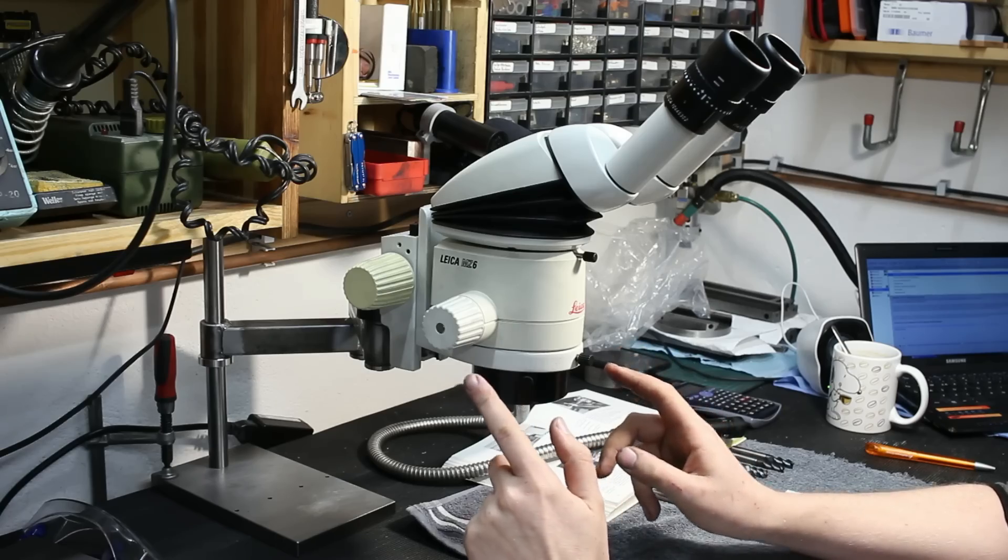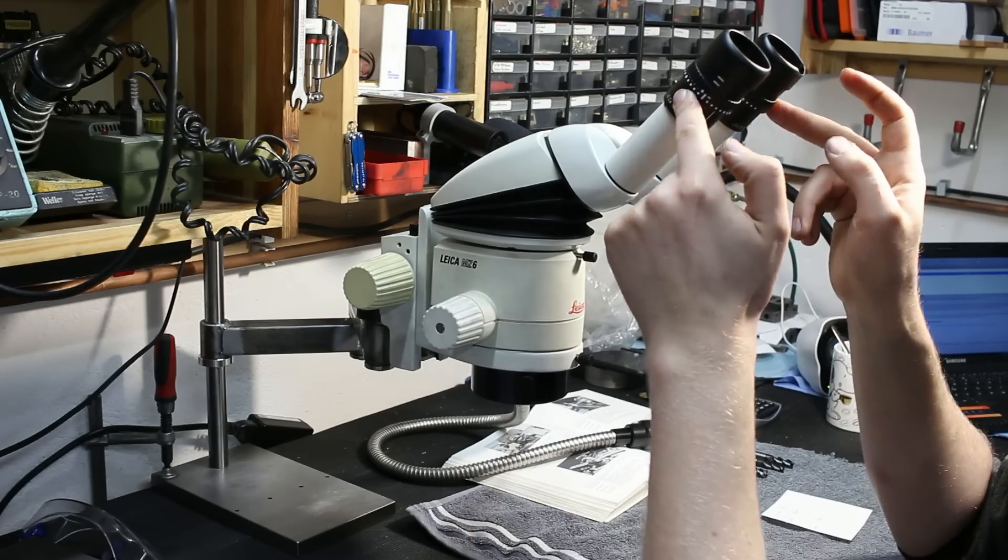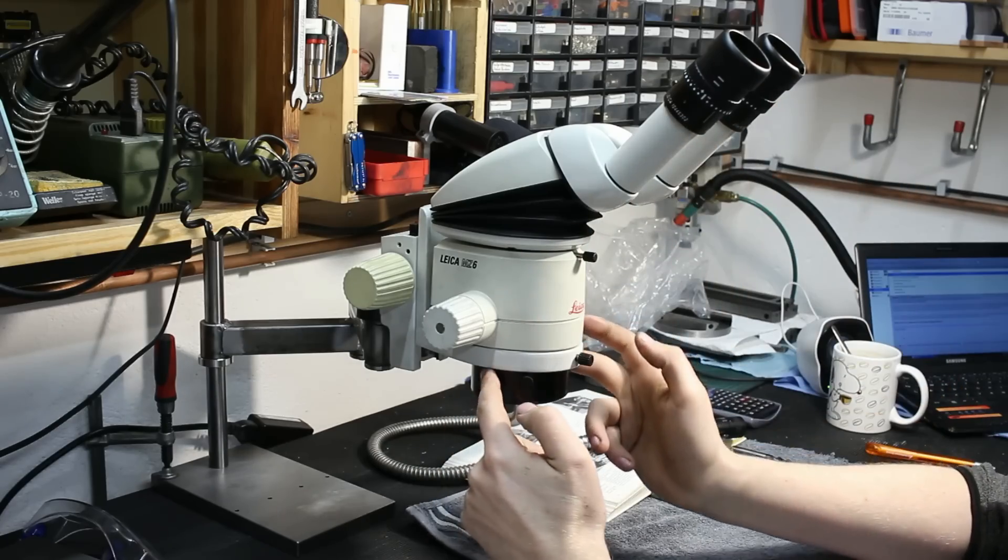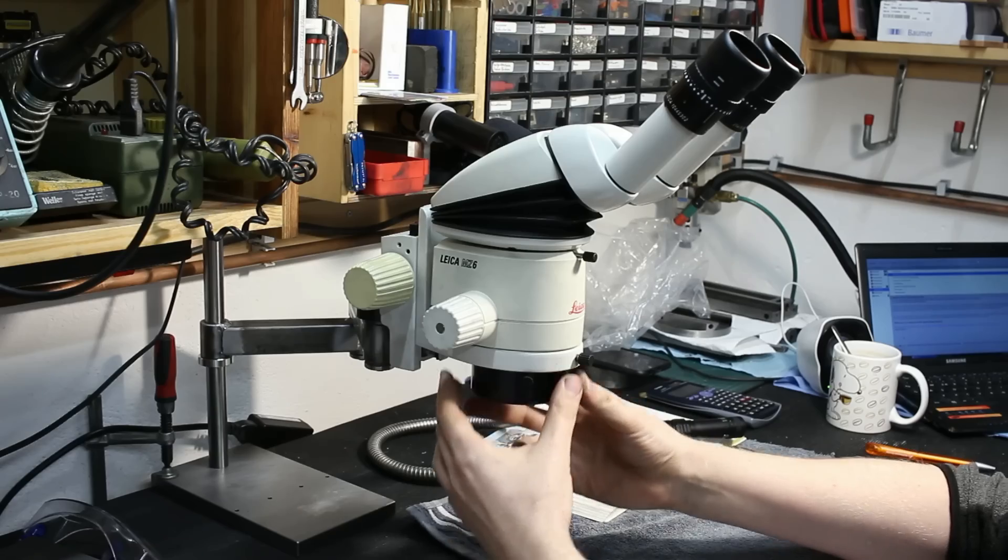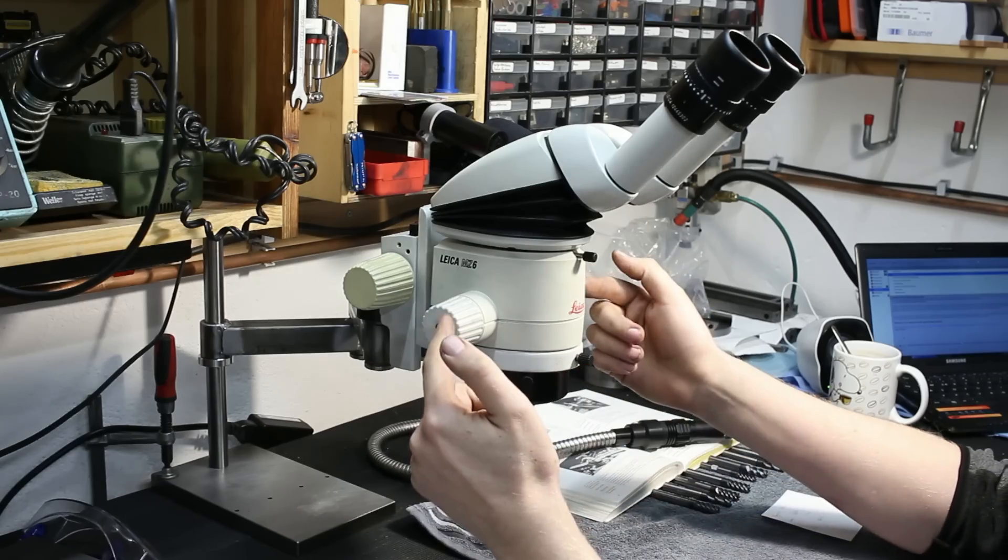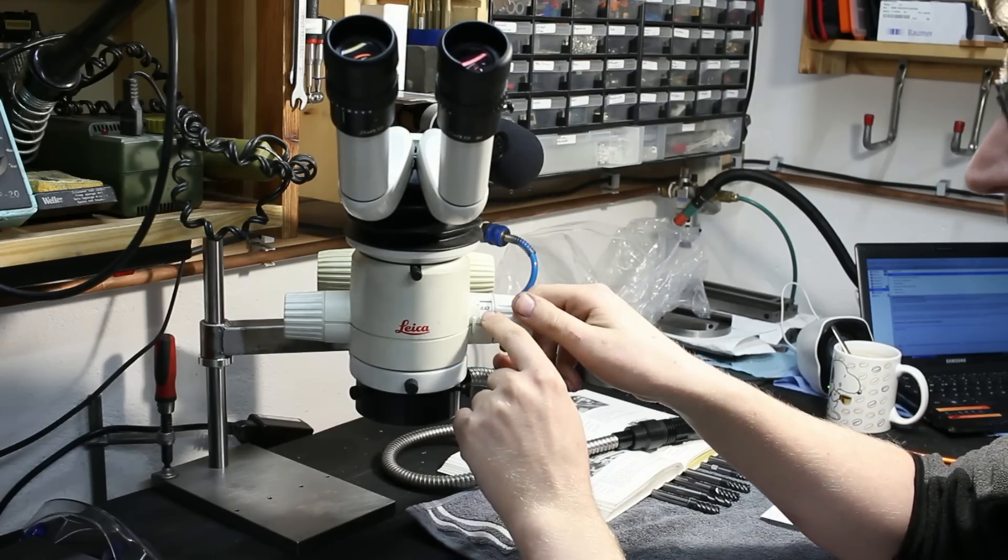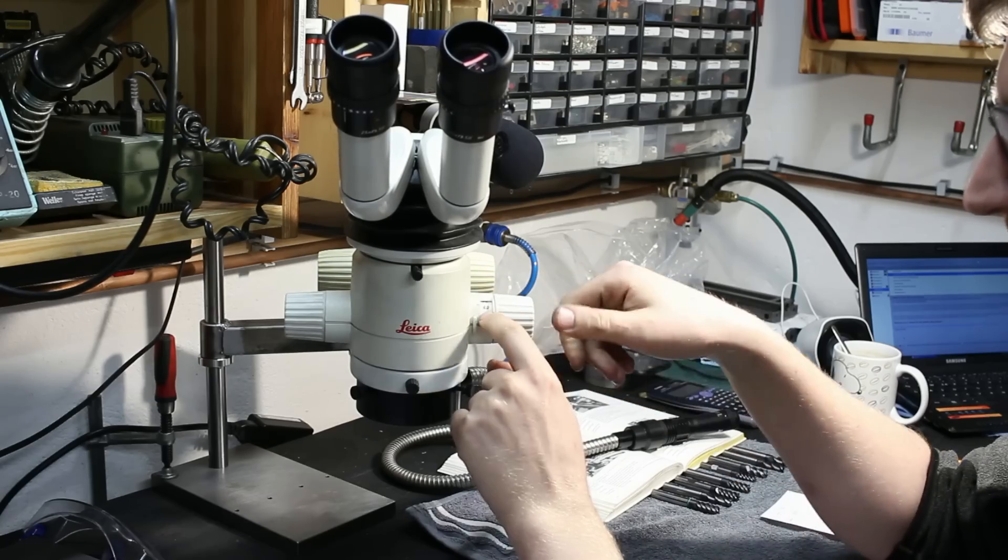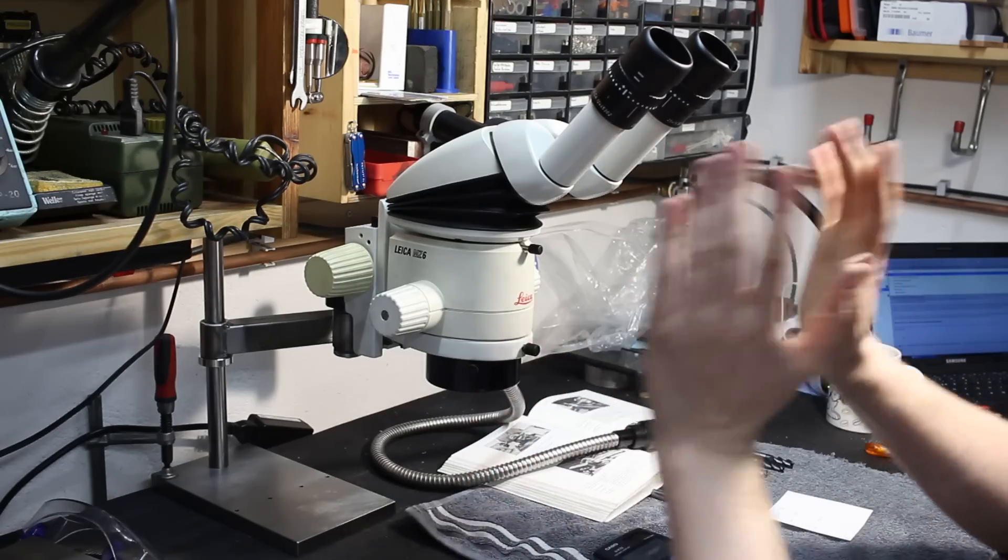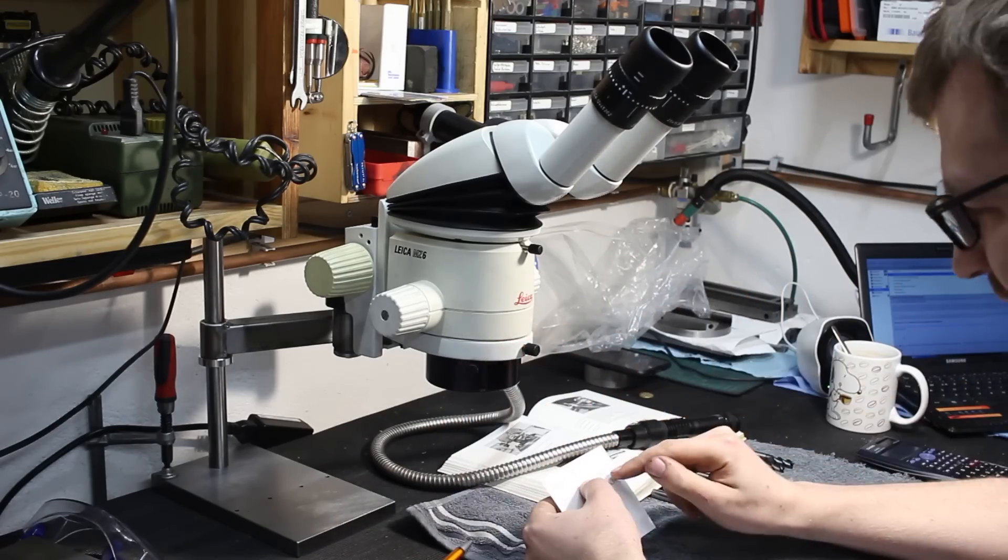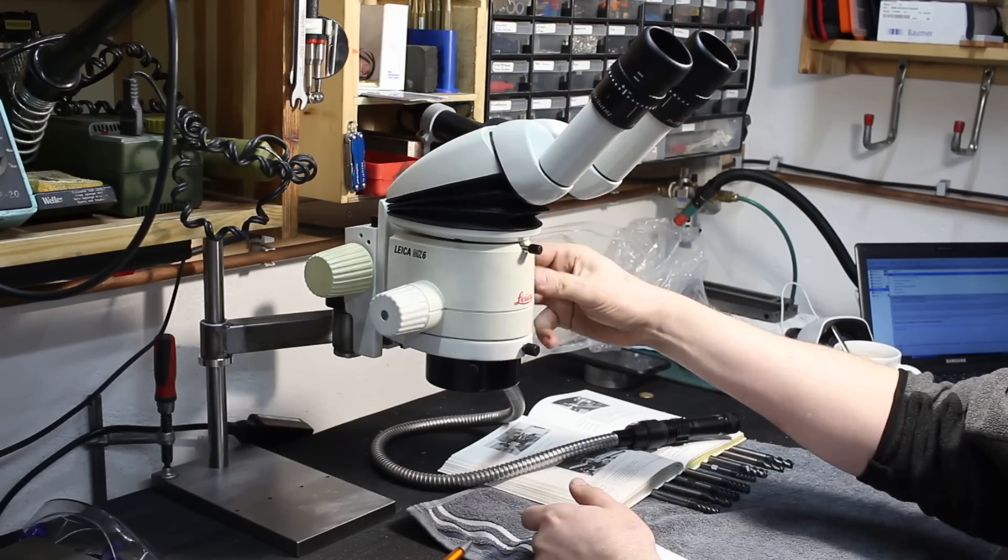This one has zoom. We have 25 times magnification up here on the eyepieces. We have 0.63 times magnification down here in an additional lens. And the microscope body here goes from 0.63 times magnification up to 4 times magnification. That in overall gives me a range of magnification from 10 times at lowest setting up to 63 times at the highest setting here.